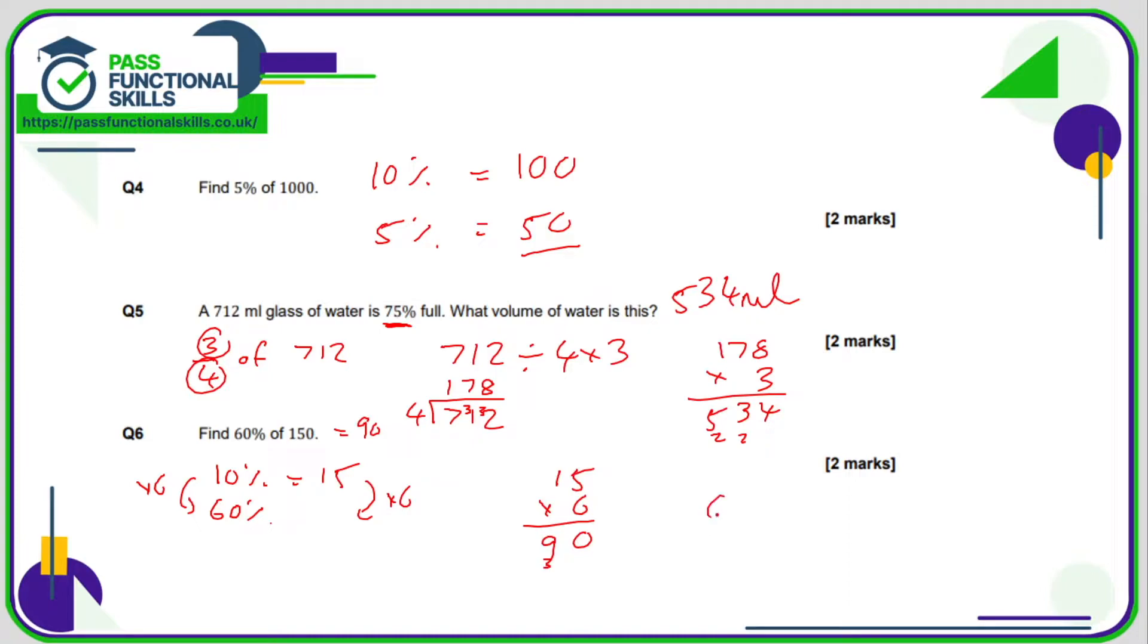Alternatively, you could have worked out that 60% is 50% and a 10% added together. 10% is nice and easy, that's 15. 50% is half. What's half of 150? 75. 75 plus 15 is, still we get the answer, 90.